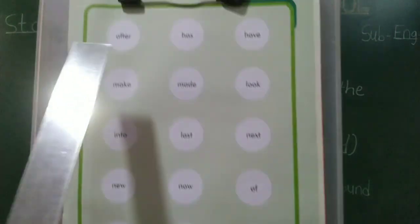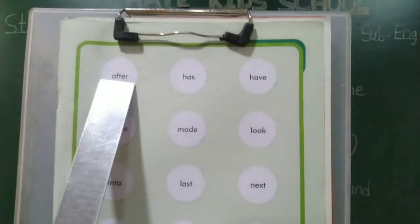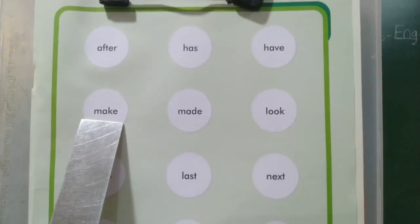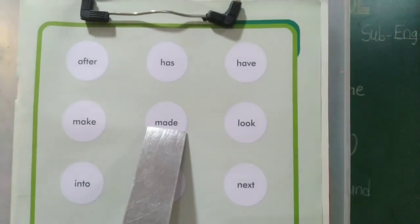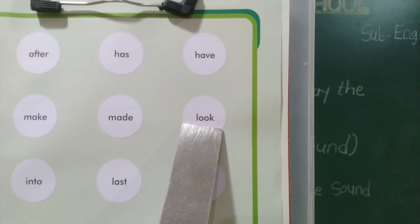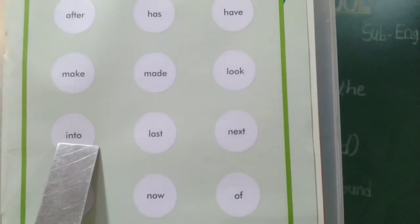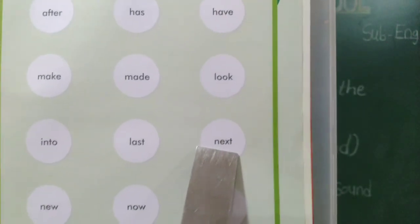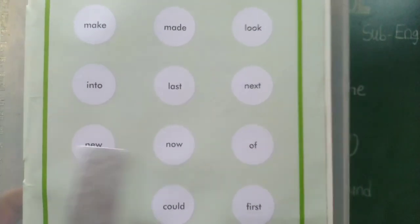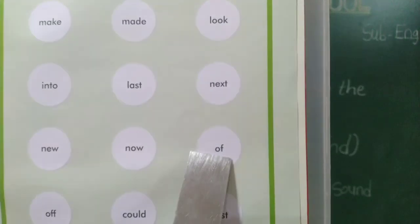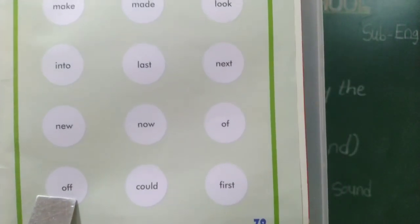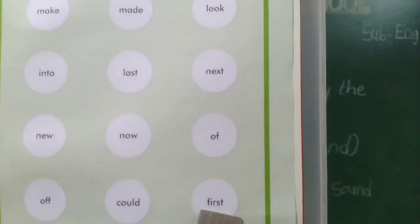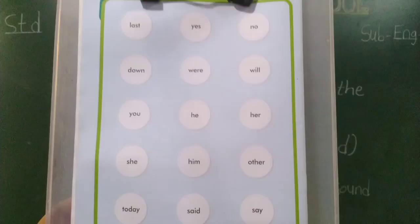Next, page number 79. A-F-T-E-R — after. H-A-S — has. H-A-V-E — have. M-A-K-E — make. M-A-D-E — made. L-O-O-K — look. I-N-T-O — into. L-A-S-T — last. N-E-W — new. N-O-W — now. O-F — of. O-F-F — off. C-O-U-L-D — could. F-I-R-S-T — first.